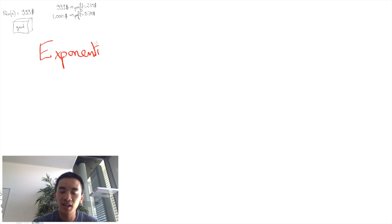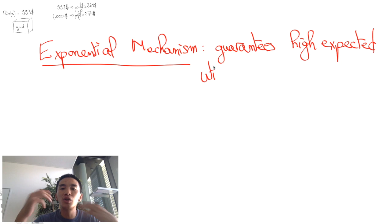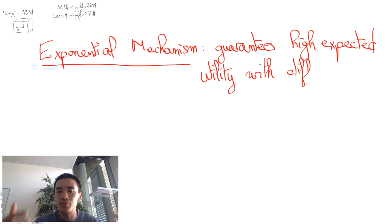Instead, the exponential mechanism allows to choose a differentially private outcome that will guarantee a good response for all perturbations of it.